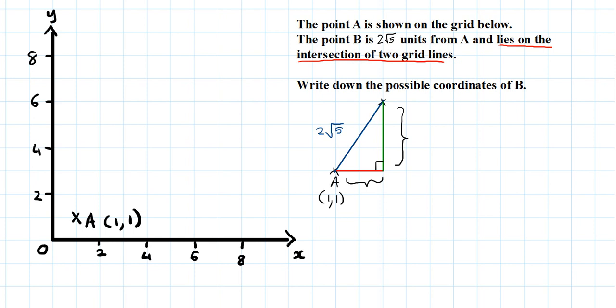So the Pythagoras theorem states that, well, I'm going to call this side side 1 and this side side 2 and that's my hypotenuse. So I know that S1 squared plus S2 squared, side 1 squared plus side 2 squared, is equal to hypotenuse squared. In my question here, hypotenuse is 2 root 5.